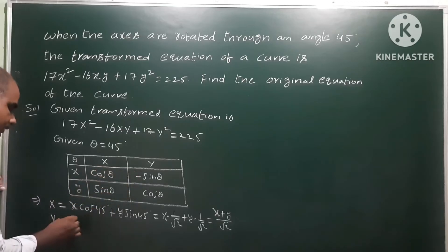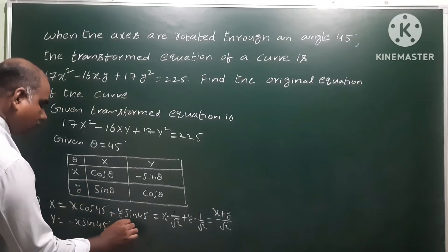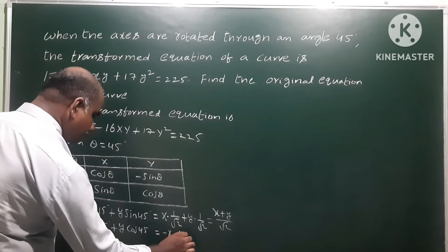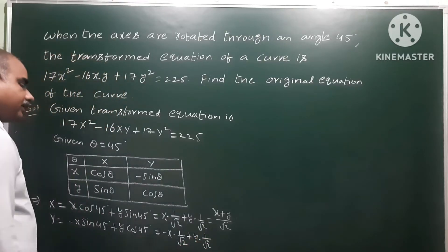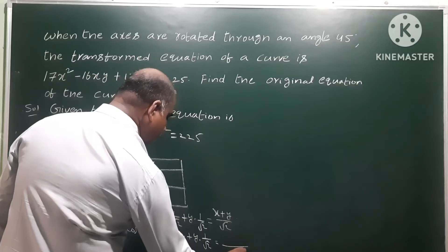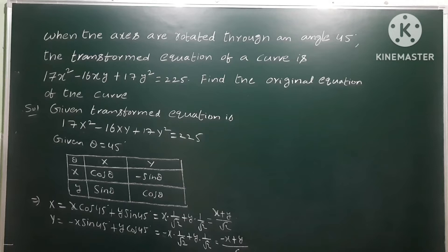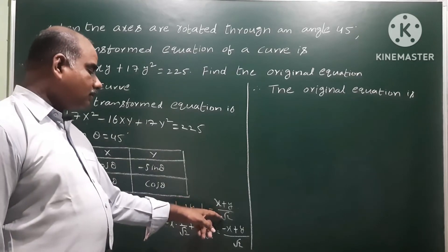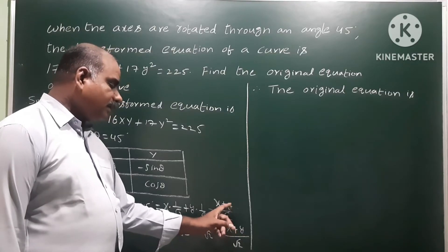For Capital Y: Y = -x·sin θ + y·cos θ. Substituting sin 45° = 1/√2 and cos 45° = 1/√2, we get Capital Y = -x/√2 + y/√2 = (-x + y)/√2 = (y - x)/√2. So the transformed coordinates are: Capital X = (x + y)/√2 and Capital Y = (y - x)/√2.